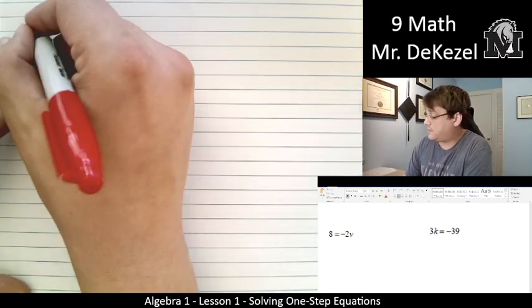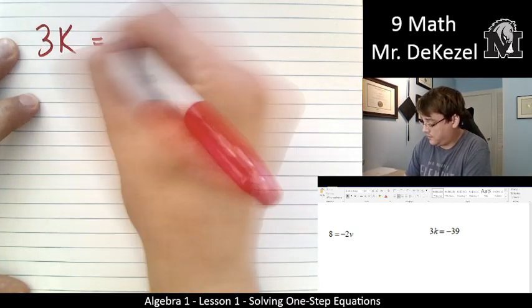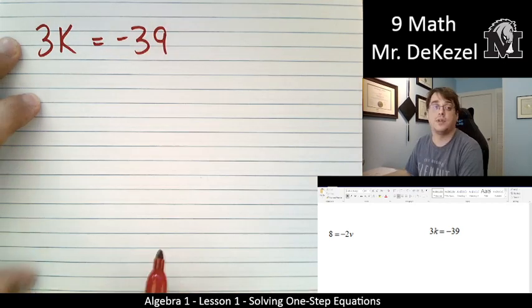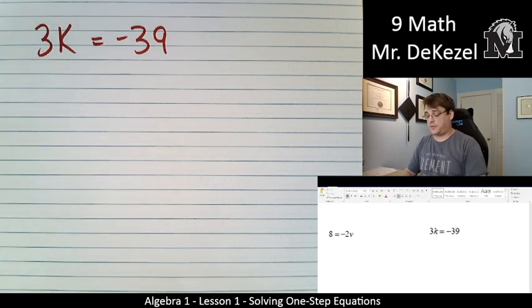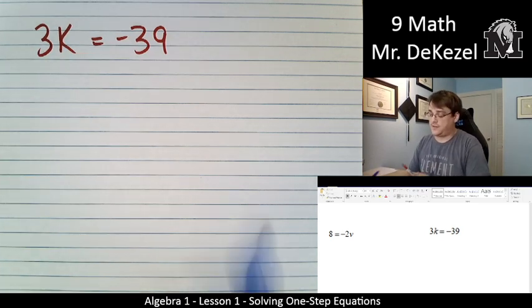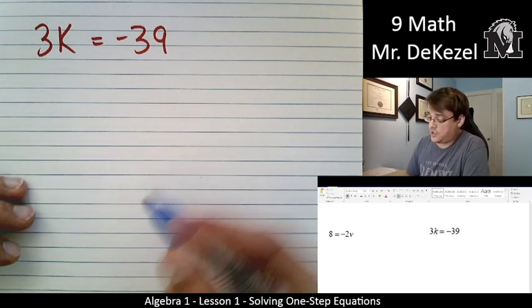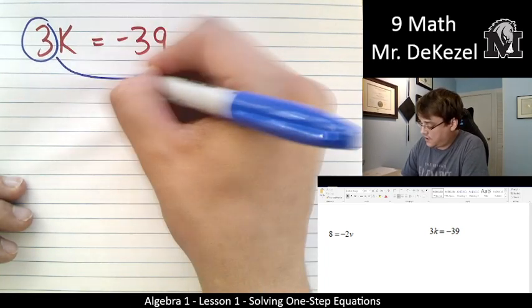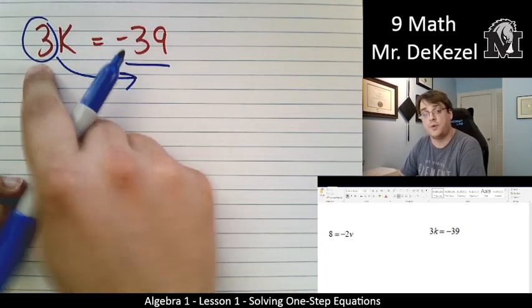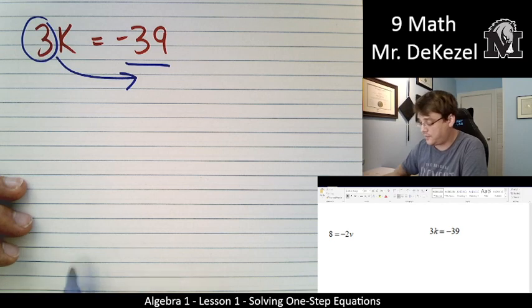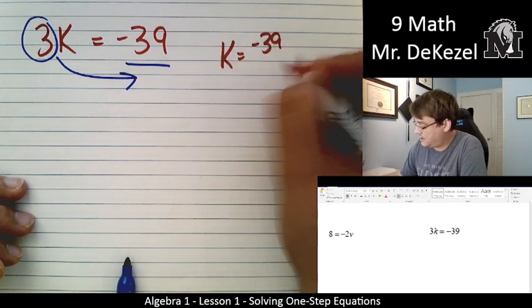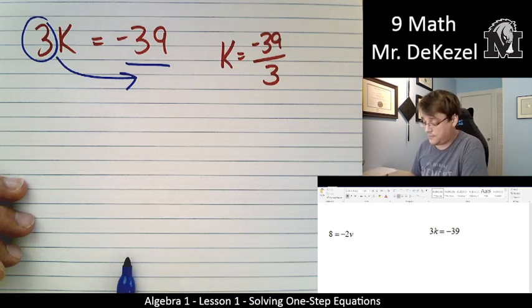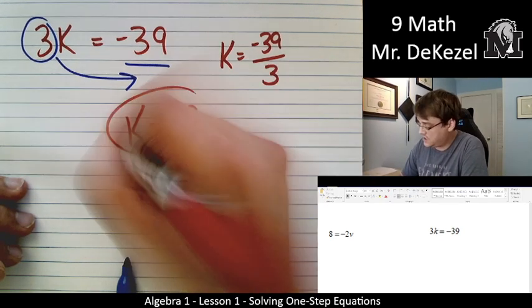Here we go for the next one. We've got 3k equals negative 39. This k needs to be all by itself. That's what we're solving for. And we've got the 3 multiplied by it. When we have something multiplied, we are going to move it across the equal sign and divide, right? It's on top on one side. It goes to the bottom on the other. So we're left with k is equal to minus 39 divided by 3. k is equal to minus 13.